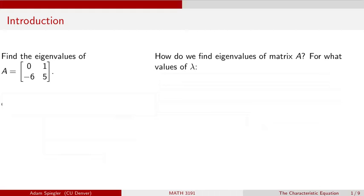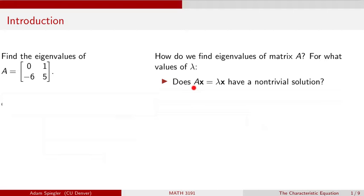Let's review some ideas we've discussed so far this semester. By definition, an eigenvalue is any scalar value lambda such that the matrix equation AX = λX has a non-trivial solution. This equation always has a trivial solution — if X equals zero, both sides equal zero — but we want to see if it has a non-trivial solution.